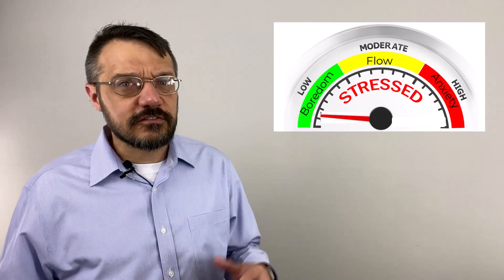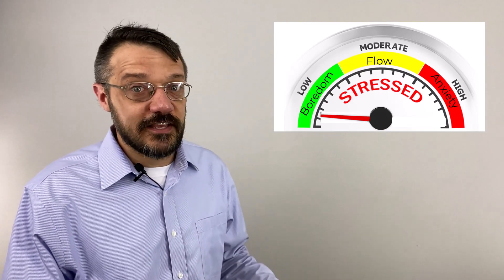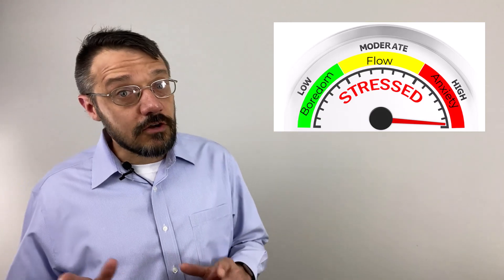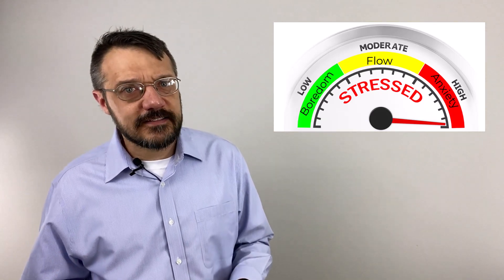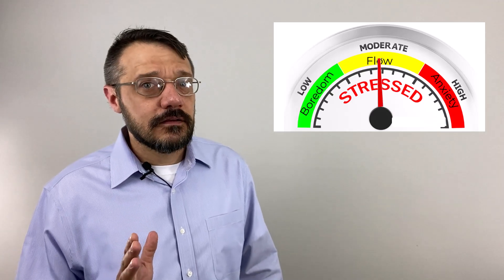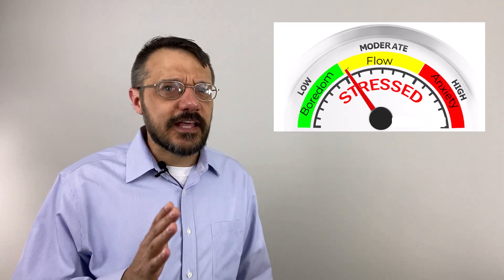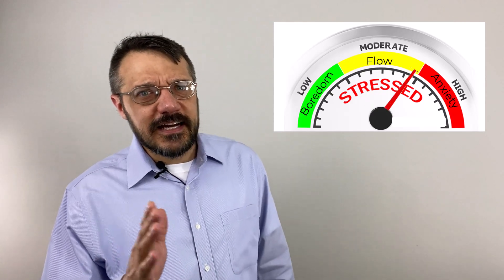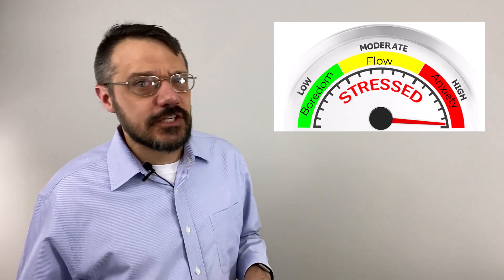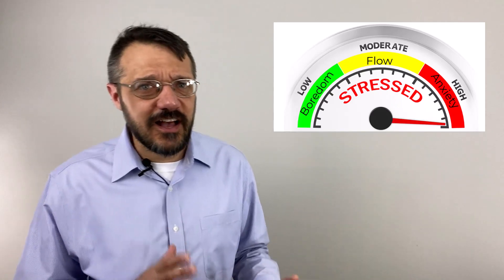Instead, I like to think of this as a gauge with boredom on the left, flow in the middle, and anxiety on the right. On the left, you get bored because there's low challenge relative to your skill. On the right, you experience anxiety because you're low skill relative to the task. And what you want to do is keep that needle kind of in the middle. Maybe you let it dip to the left so you can get a rest, maybe gun it to the right a little for some excitement, but you never want this gauge pegged to either side for too long.